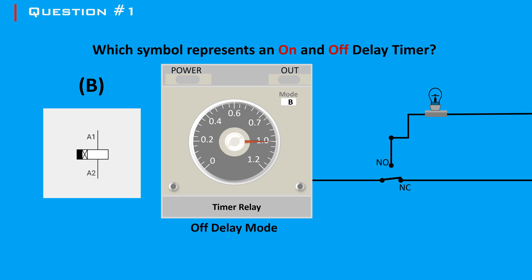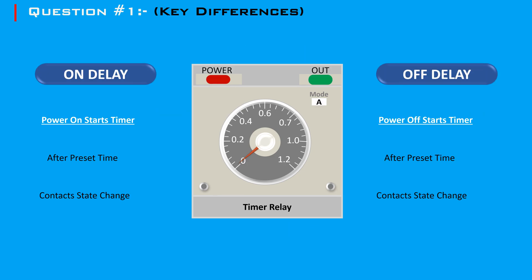In off-delay mode, when the input signal is applied, the output contacts change state immediately. The timer starts counting the preset delay time only when the input signal is removed — for example, 1 minute. After the delay time elapses, the output contacts return to their original state. It is typically used in applications where a delay is required before turning off a device or circuit, such as delayed deactivating of alarms or signals, or timed lighting control.